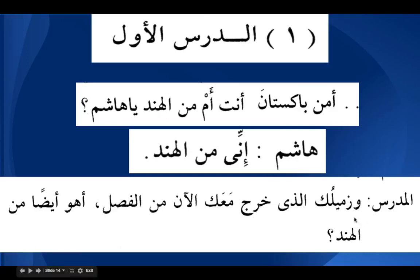The teacher asks: Wa zamiluka — zamiluka is mudaf and mudaf ilahi; zamilu plus ka, where ka is damir muttasil majroor as mudaf ilahi. The teacher continues: Wa zamiluka alladhi kharaja ma'aka al-ana minal fasl. Alladhi is ismu mawsul and kharaja ma'aka minal fasli is the jumlatul fi'liya coming as silatul mawsul for alladhi.